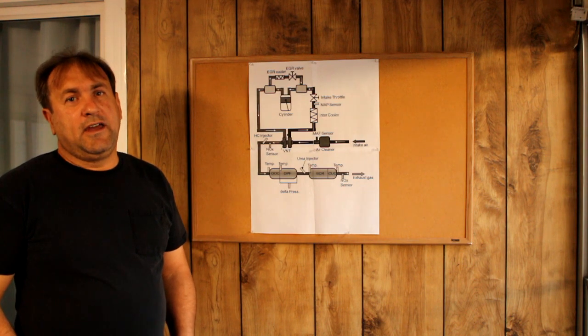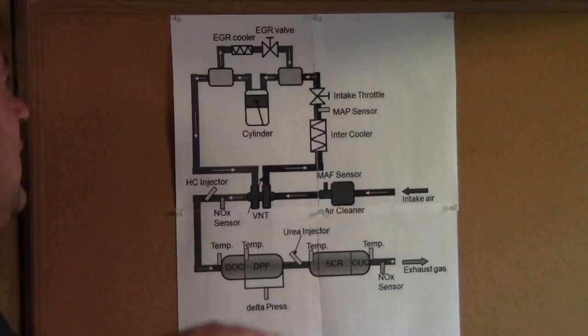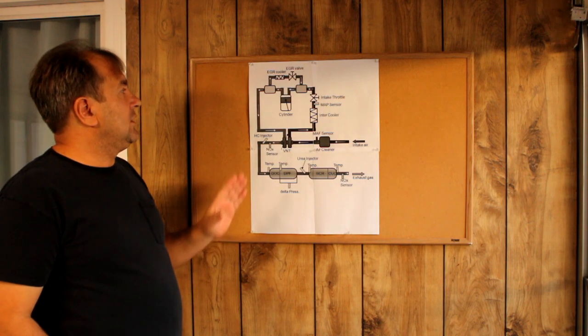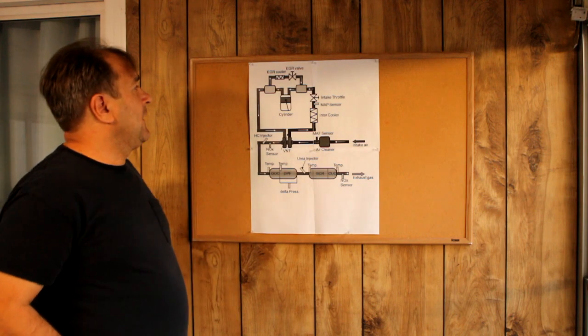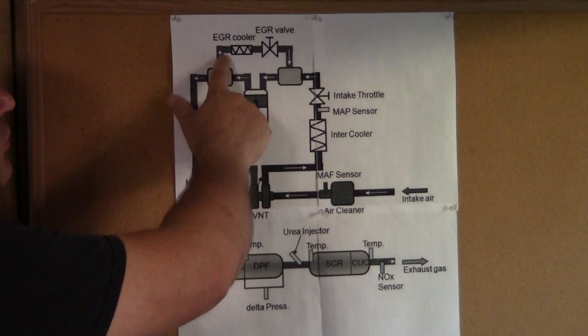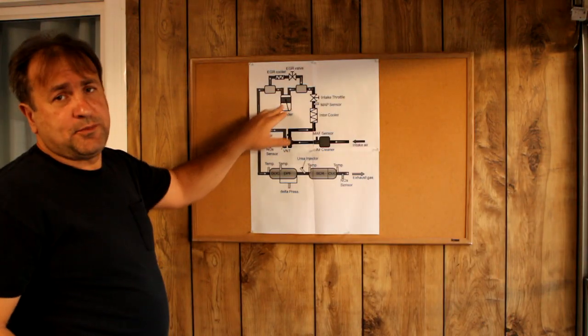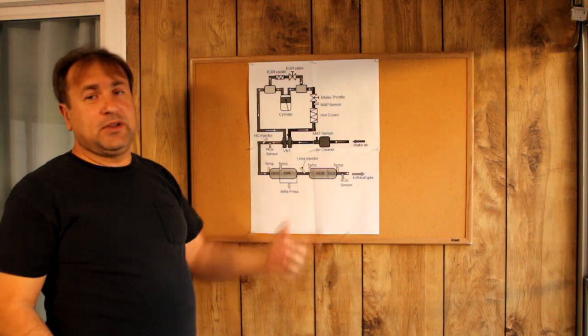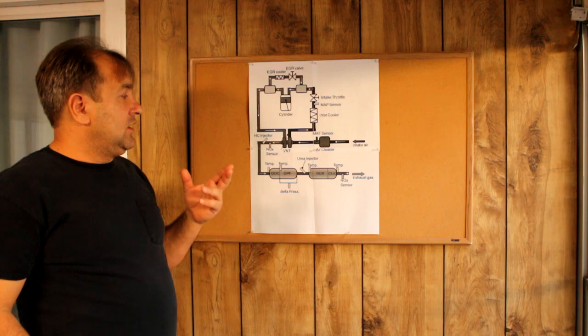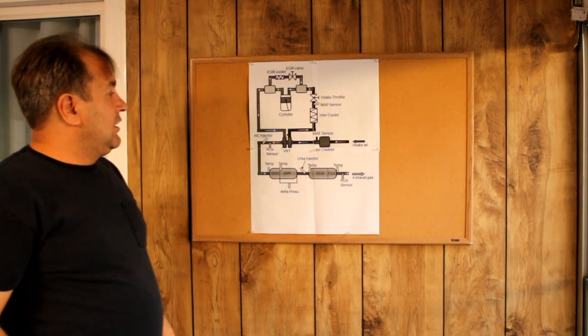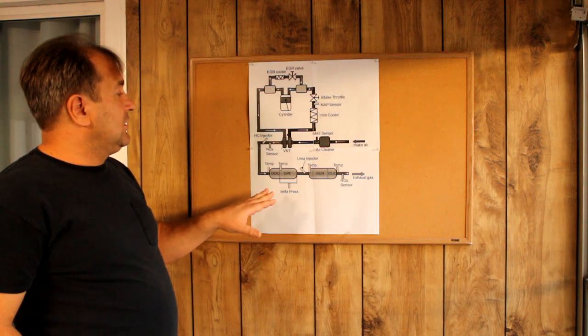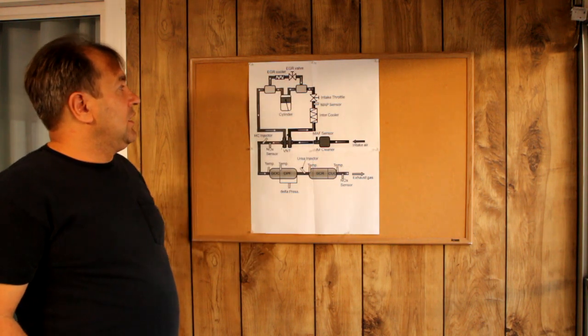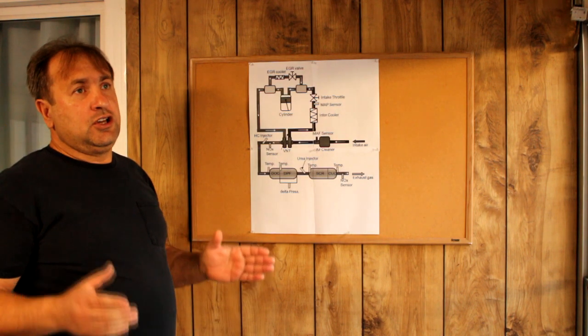Right now we're gonna discuss the first step. They implemented the EGR system. The EGR system takes exhaust gases and recirculates them into the chamber. Why are they doing this? Because in the exhaust we have two bad things which come out of our pipe: NOx and smoke or soot.